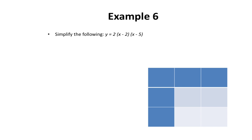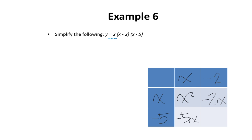In our sixth example, we want to simplify: y equals 2 multiplied by x minus 2 multiplied by x minus 3. You'll notice something different — there is a number in front of the binomials. We're going to deal with this number after we deal with the binomials. I'm going to put x and negative 2 in the chart, and x and negative 5 below. x times x is x squared, x multiplied by negative 2 is negative 2x, negative 5 multiplied by x is negative 5x, and negative 5 multiplied by negative 2 is positive 10.